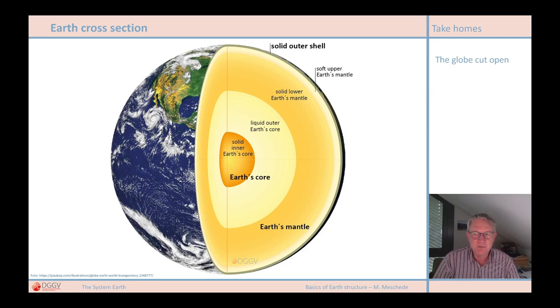Almost everything that is important to us geologists on the Earth's surface actually happens in this thin outer shell. Most processes of plate tectonics take place here in this thin layer. If we look at this figure, in particular at the scale that you see here, then we have a problem. We can't really recognize the area that interests us so much about plate tectonics because it's simply too small, too thin.